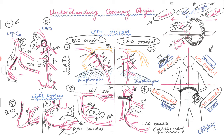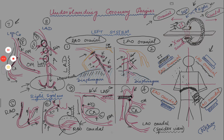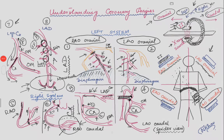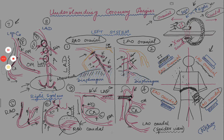Diagonal branches come off the LAD at an acute angle, distinguishing them from the septal perforators which are perpendicular. Another identifying feature is the LAD near the apex — in about 60 to 70 percent of patients, the LAD will split in a mustache pattern at the apex. These two or three hints — septal perforators at 90 degrees, acute-angle diagonals, and the mustache split — can help you determine whether you are looking at the circumflex or the LAD. I hope this was helpful.